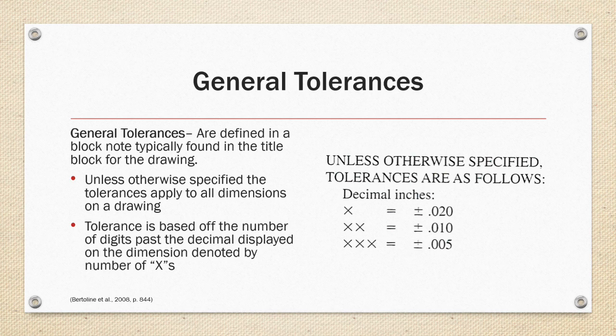In the example on the right, if a dimension has one digit to the right of the decimal, the acceptable tolerance is plus or minus 0.020. If a dimension has two digits to the right of the decimal, the tolerance tightens to plus or minus 0.010 and tightens further to plus or minus 0.005 if a dimension has three digits to the right of the decimal.